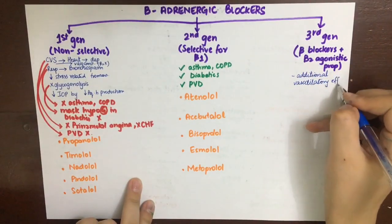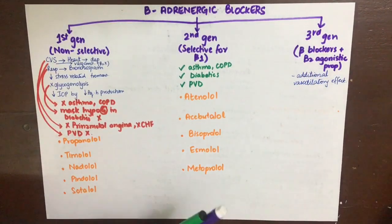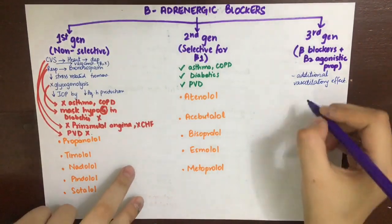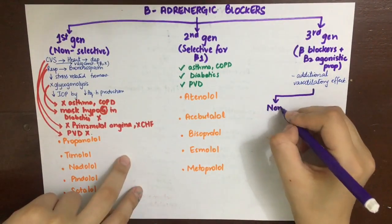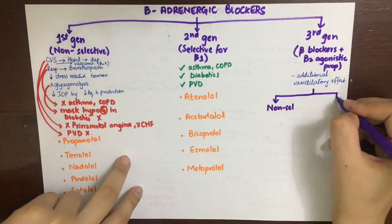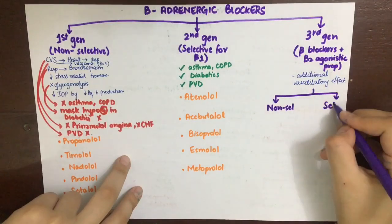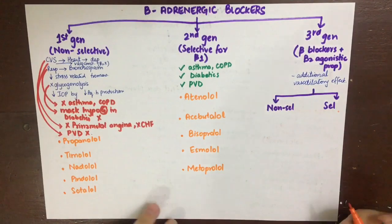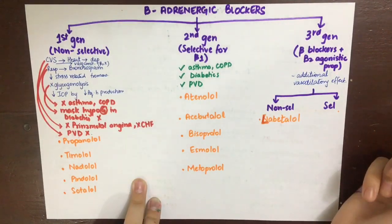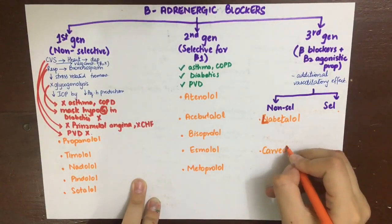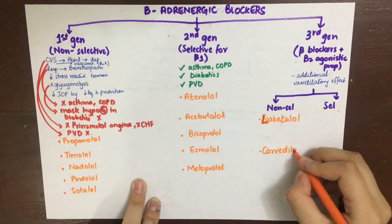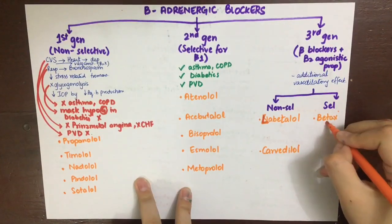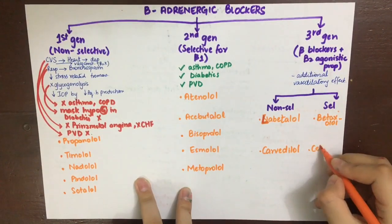Third-generation beta blockers have additional beta-2 agonistic properties, giving them vasodilatory effects. They are classified into non-selective and selective. Non-selective ones include labetalol and carvedilol, while selective ones include betaxolol, celiprolol, and nebivolol.